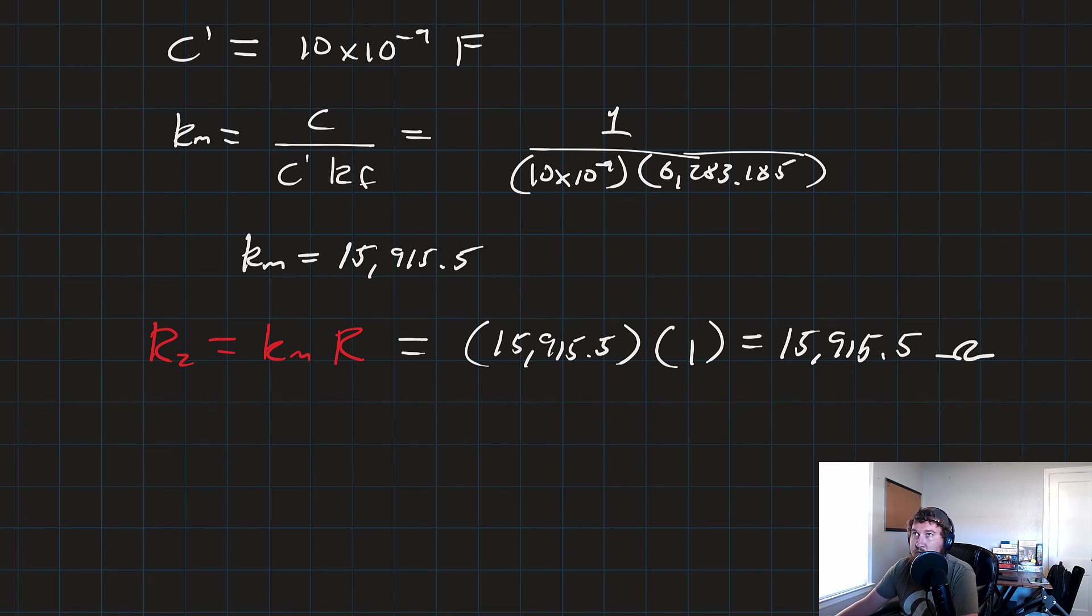And our value for R1 is going to be, we're going to use that gain. Remember, we need to get a gain of 5, so it's going to be R2 over K. So that's going to be this big guy, 15,915.5 over 5, and that equals 3,183 ohms.